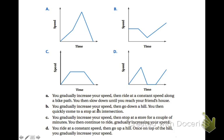So let's look at these, A, B, C, and D. So the description at the bottom, you gradually increase your speed, then you ride at a constant speed along a bike path. You then slow down until you reach your friend's house.